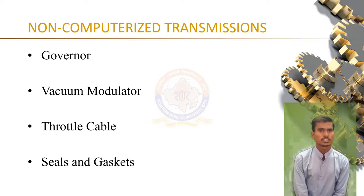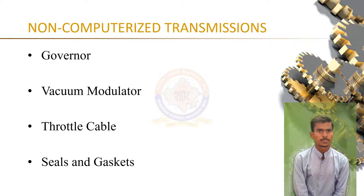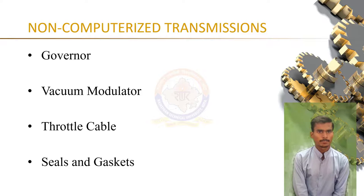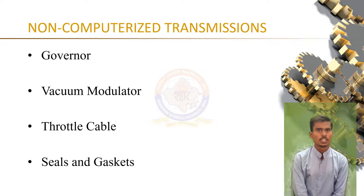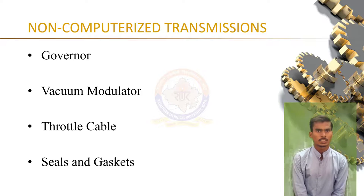There are also some non-computerized transmission controls. The governor uses centrifugal force to direct oil from the oil pump through the shift valve to the appropriate clutch and brake valve. The vacuum modulator tells the transmission what kind of load is being put on it, allowing the transmission to react with the proper line pressure and shift point. The throttle cable is a cable device that supplies throttle input to the transmission by detecting the gas pedal position, connecting to the gas pedal on one end and the transmission throttle valve on the other.